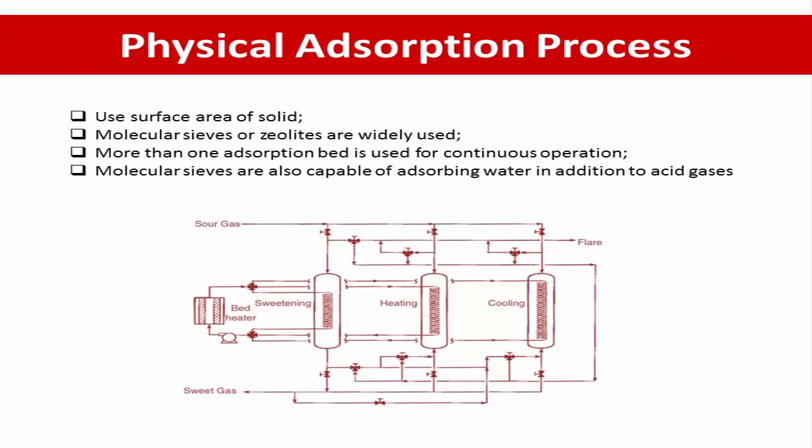The next unit is physical absorption using solid sorbents. In this process, a solid with a high surface area is used. Molecular sieves or zeolites are widely used and are capable of absorbing large amounts of gas. In practice, more than one absorption bed is used for continued operation — one bed is in use while the other is being regenerated. Regeneration is accomplished by passing hot dry gas through the bed. Molecular sieves are competitive only when the quantity of hydrogen sulfide and carbon disulfide is low. Molecular sieves are also capable of absorbing water in addition to the acid gas.